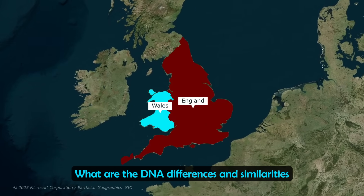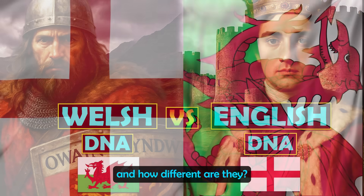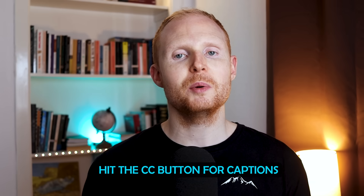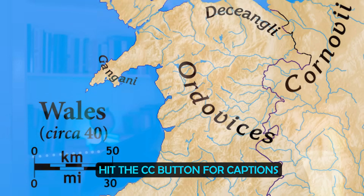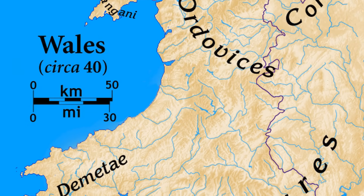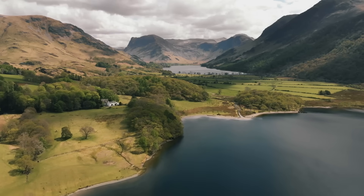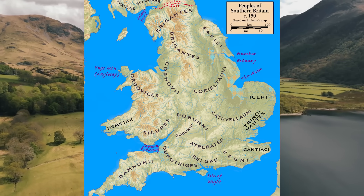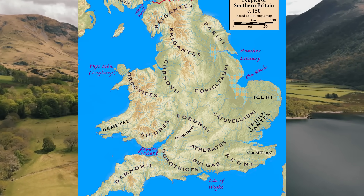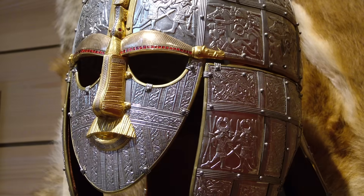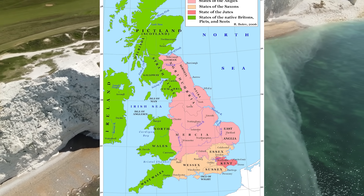What are the DNA differences and similarities between England and Wales, and how different are they? In ancient times, the landmass of Wales today was inhabited by tribes of Celtic Britons, such as the Silures. Ancient England was home to similar tribes who belonged to the same broad people as well. This dramatically changed after the Anglo-Saxons arrived, following the Roman withdrawal in the 5th century AD.